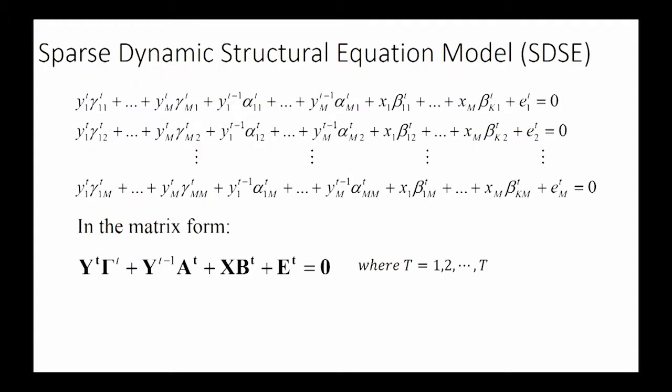So first, the key methodology in our model is called a sparse dynamic structure equation model. Basically, we have at a specific time T, we have the Y variable, the variables in the previous time point, and also we have the S variable, which is the covariate. This is the matrix form. The last row is the matrix form of our modeling.